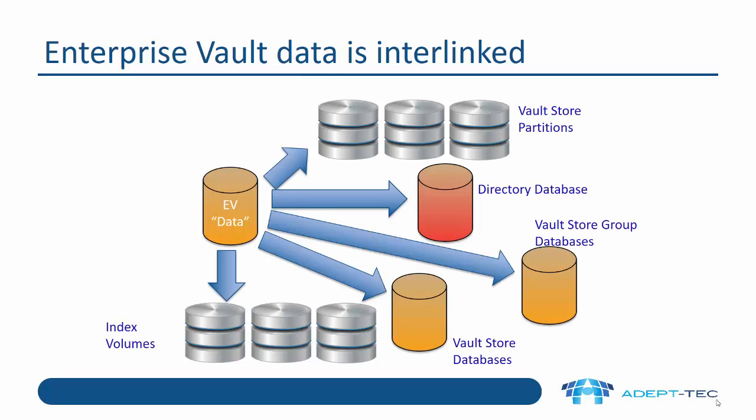We're going to start by thinking about what we need to back up. The big issue with Enterprise Vault data is it's interlinked. We have our databases in SQL, the archived items within Vault Store partitions, references within Vault Store group databases, and our index volumes — and all this data is interlinked. So it's very important we back it all up together.